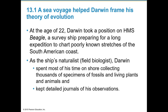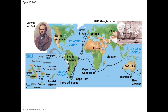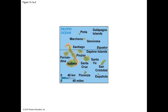As the ship's resident field biologist, Darwin spent most of his time on shore collecting thousands of specimens of fossils and living plants and animals, keeping very detailed notes of all his observations. This map gives you an idea of how much traveling was done by Darwin, and he is most often associated with the Galapagos Islands.